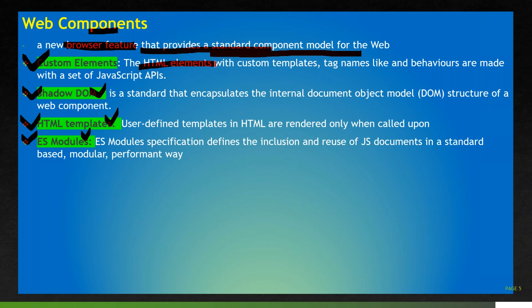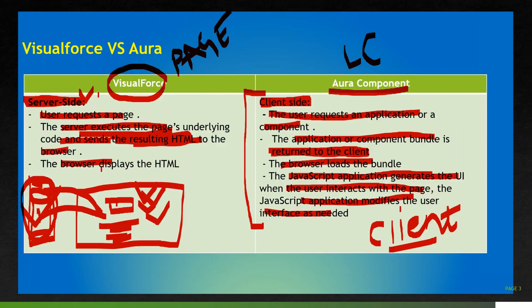Custom elements are HTML elements with a custom tag name and behavior. We can develop our custom elements with the help of HTML and JavaScript APIs. So Lightning Web Components are a set of custom elements built in HTML and JavaScript.